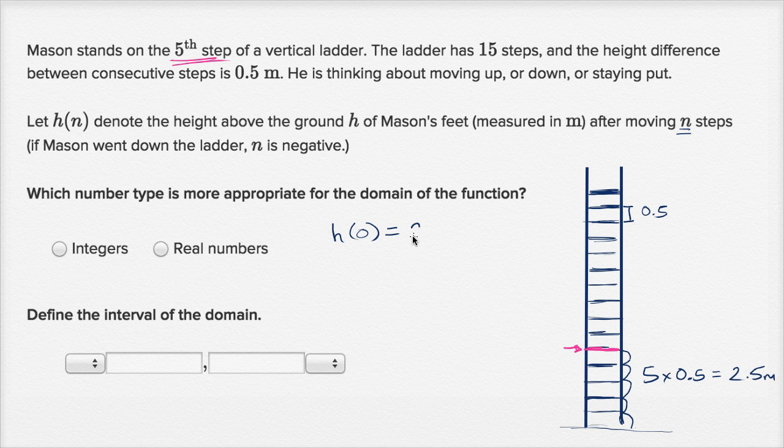So h(0) is 2.5 meters. If I said h(1), that means he goes up. h(1) means he goes up one step. So here, n would be equal to one. So if he goes up one step, h(1), he's going to be half a meter higher. So it's going to be equal to three meters. So we could keep doing that for a bunch of different inputs. That's going to be equal to three meters.